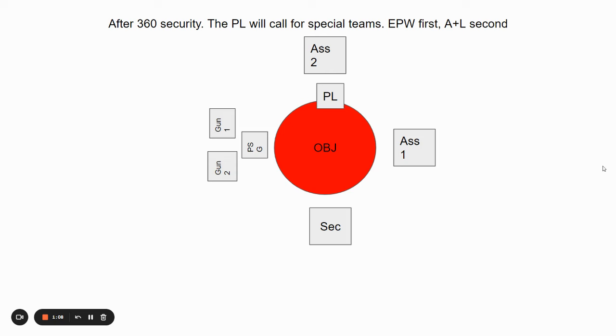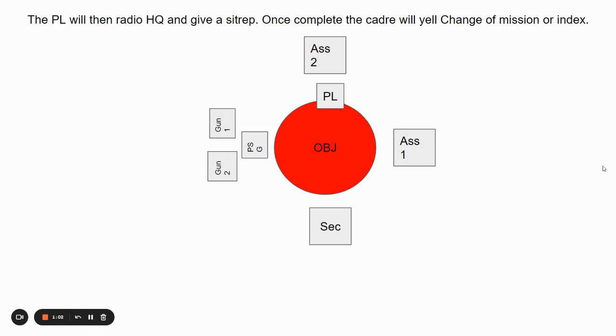Once all of the elements are in place, you want to spread them out evenly and pull 360 security. Then after 360 security, the platoon leader will call for special teams with the enemy prisoner of war first and then aid and litter second. Once that's complete, the PL will radio HQ and give them a situational report. Once complete, the cadre will yell change of mission or index. And that is how you conduct a platoon attack.